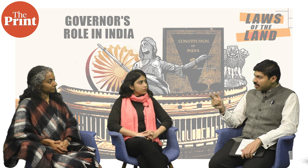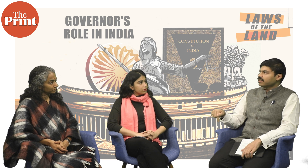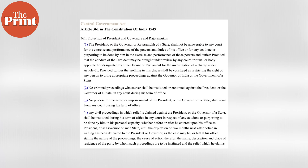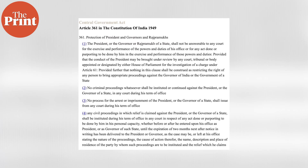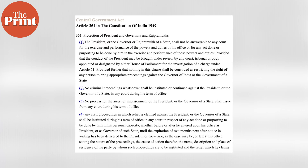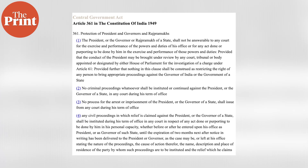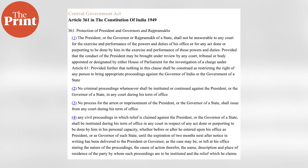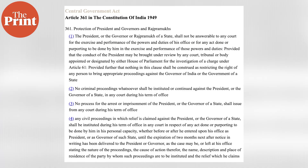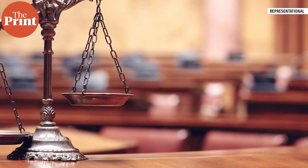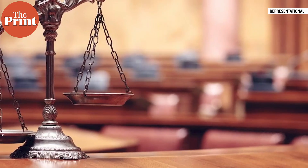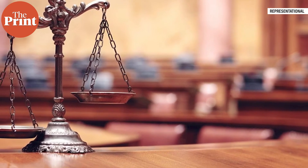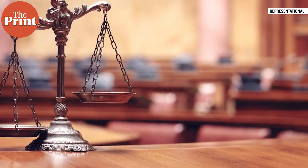It is also important to note that the governor has immunity under Article 361. A governor can't be summoned — although he is the Raj Pramukh, the first person of the state — he can't be summoned under Article 361. However, actions or inactions of the governor are subject to judicial review. They are not completely immune in that sense.